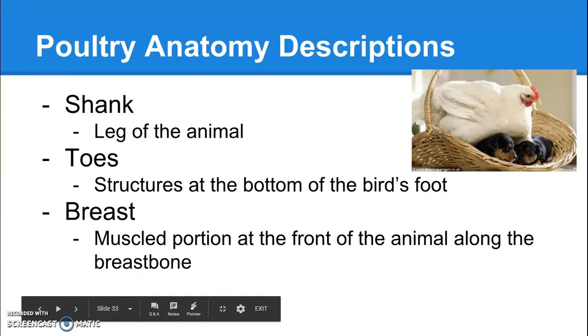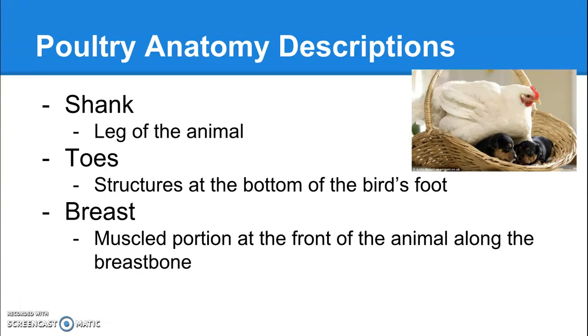The shank is the leg of the animal. The toes are the structures at the bottom of the bird's feet — they're exactly what you think they are. The breast is the muscle portion at the front of the animal, just along the breast bone.